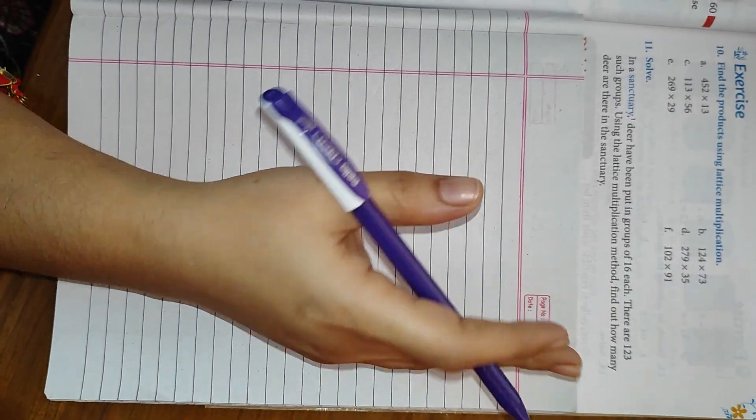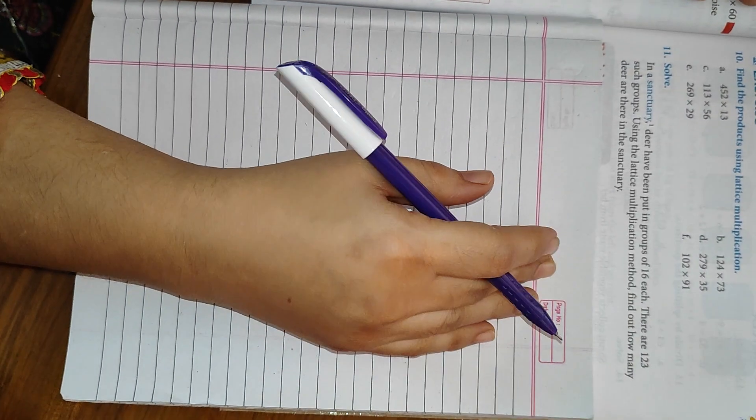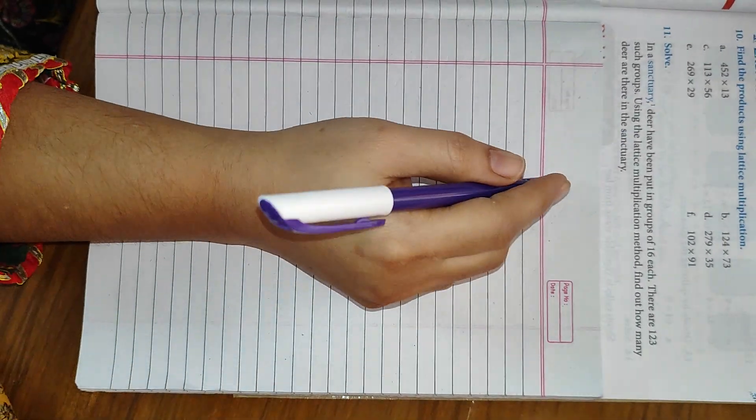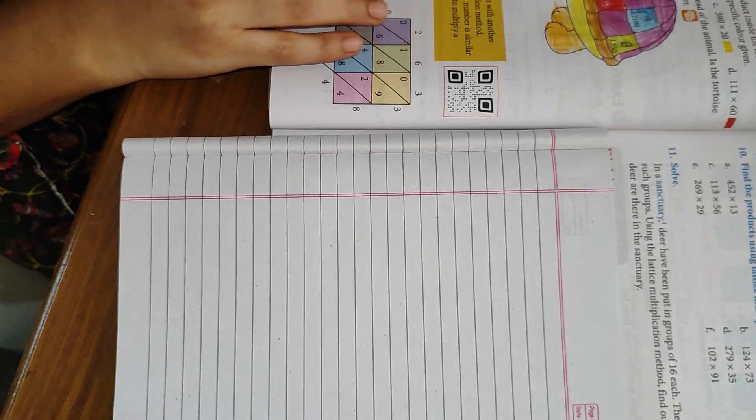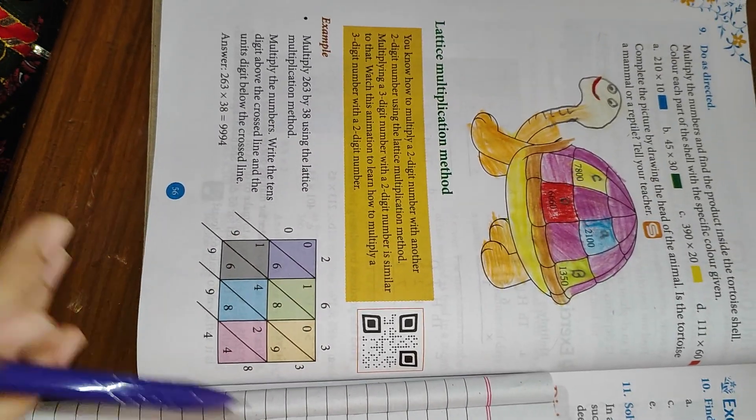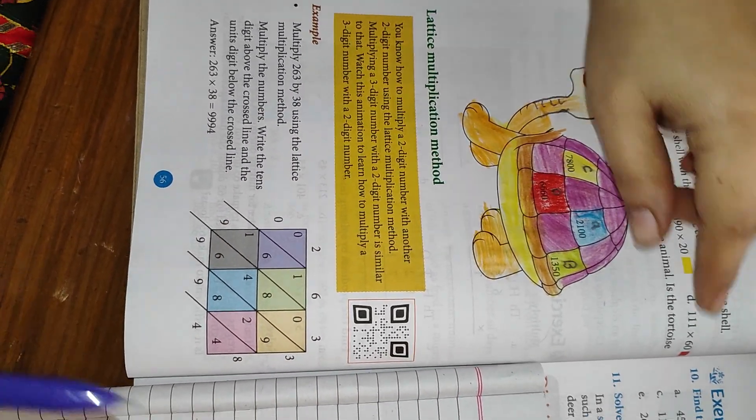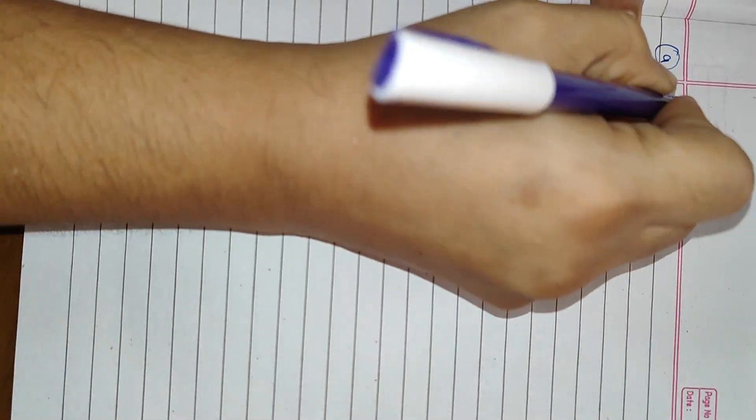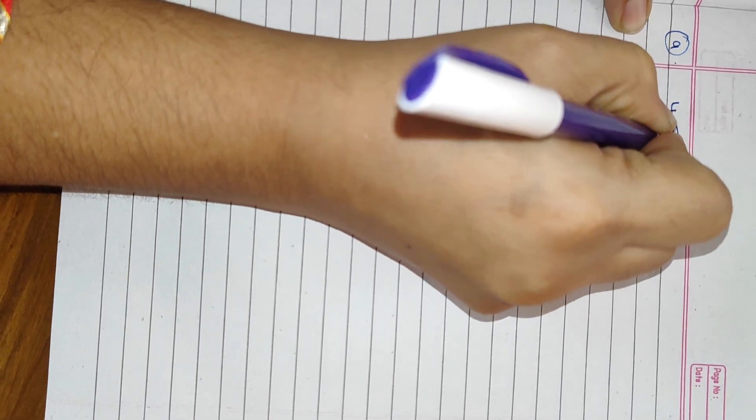They were having confusion, and I thought I will share this video with you also. Maybe there are students who don't know how to do lattice multiplication. So here I am, let's do it. See, here lattice multiplication method is explained, but maybe it is not enough for somebody to understand. So let me do it here for you all. Okay, let's do the first one: 452 multiplied by 13.